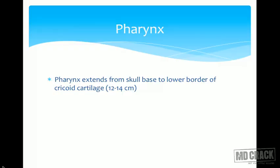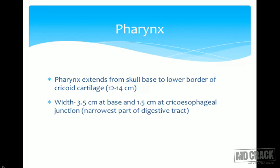Moving on to the pharynx: it extends from the skull base to the lower border of the cricoid cartilage, around 12 to 14 centimeters in length. Its width is 3.5 cm at the base and 1.5 cm at the cricopharyngeal junction, which is the narrowest part of the digestive tract — an important MCQ point.